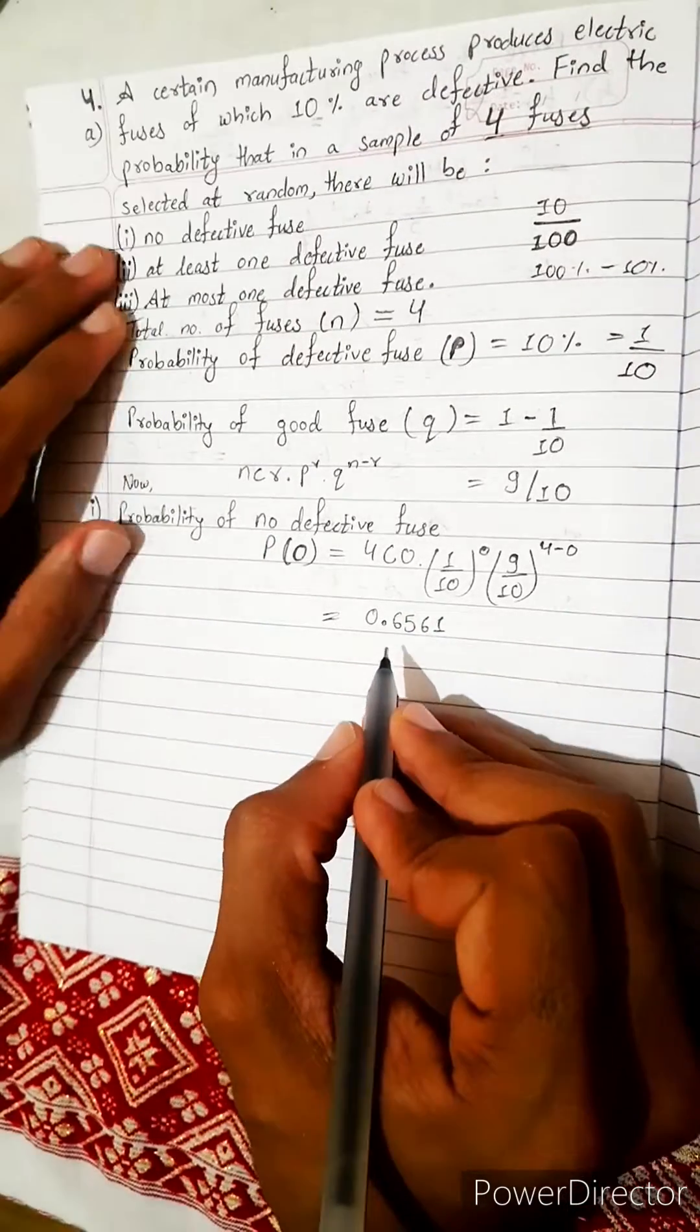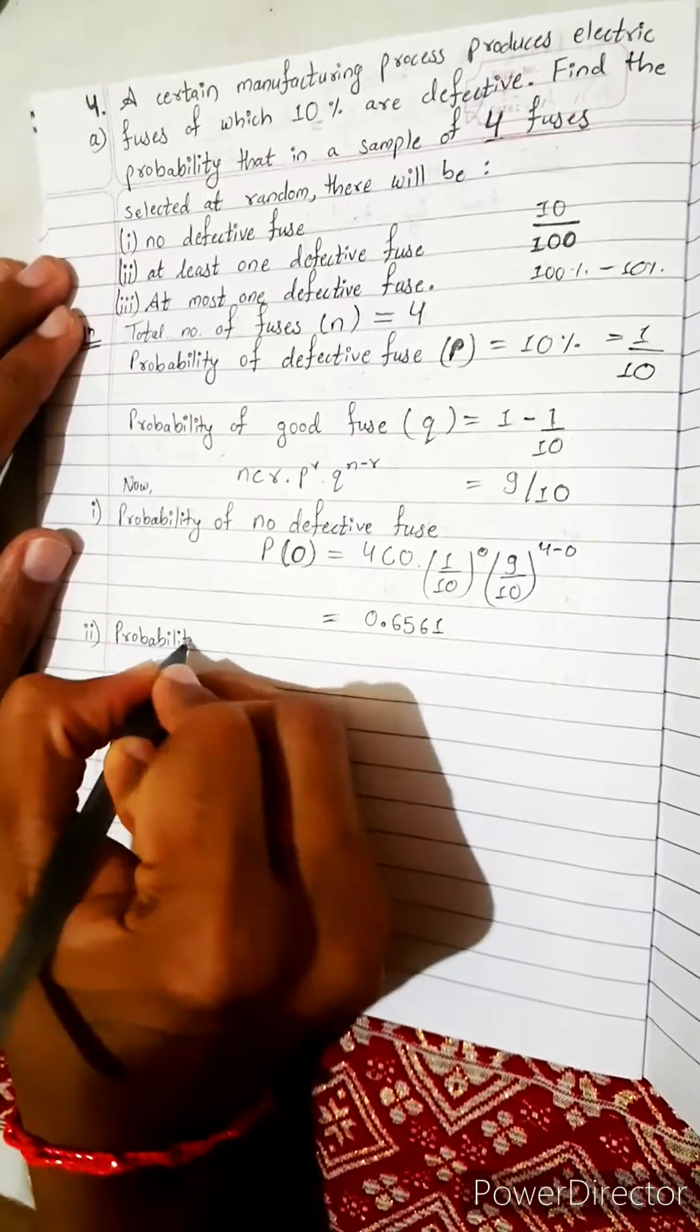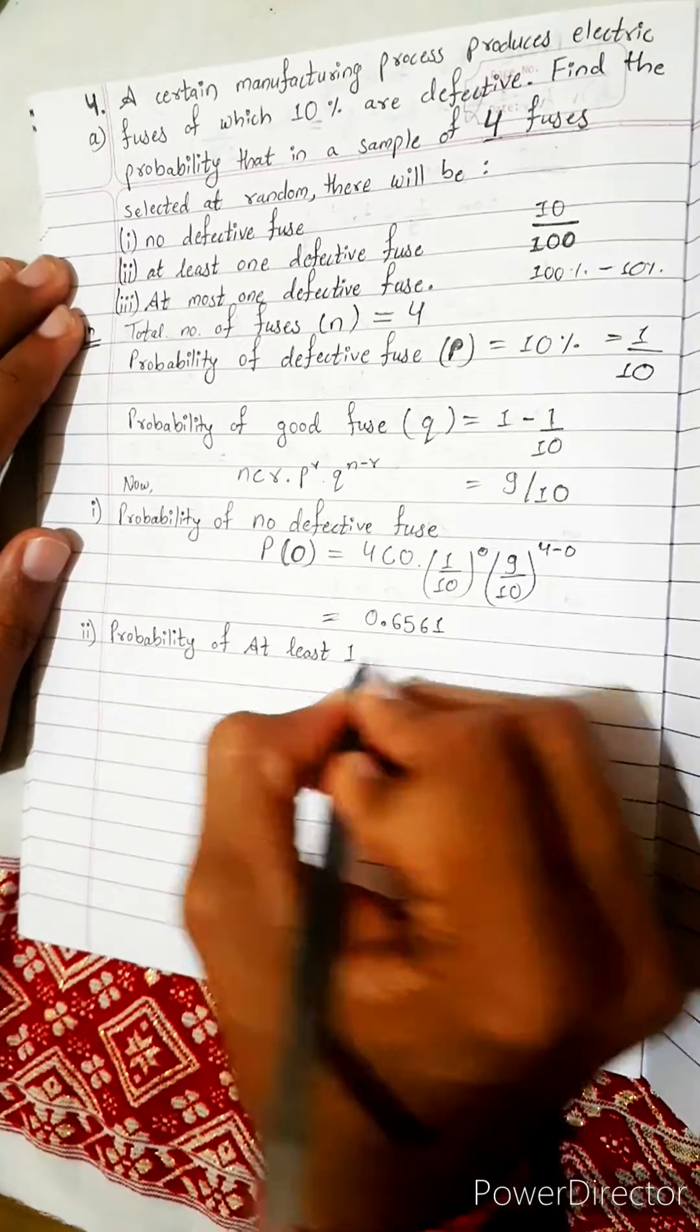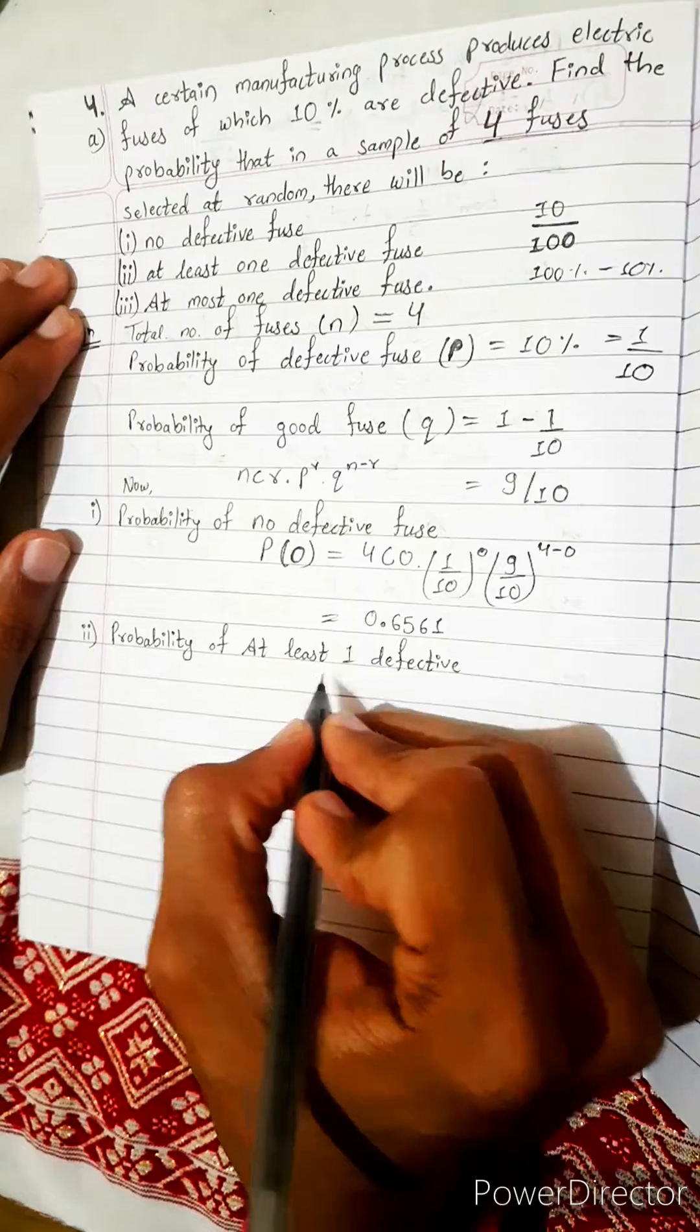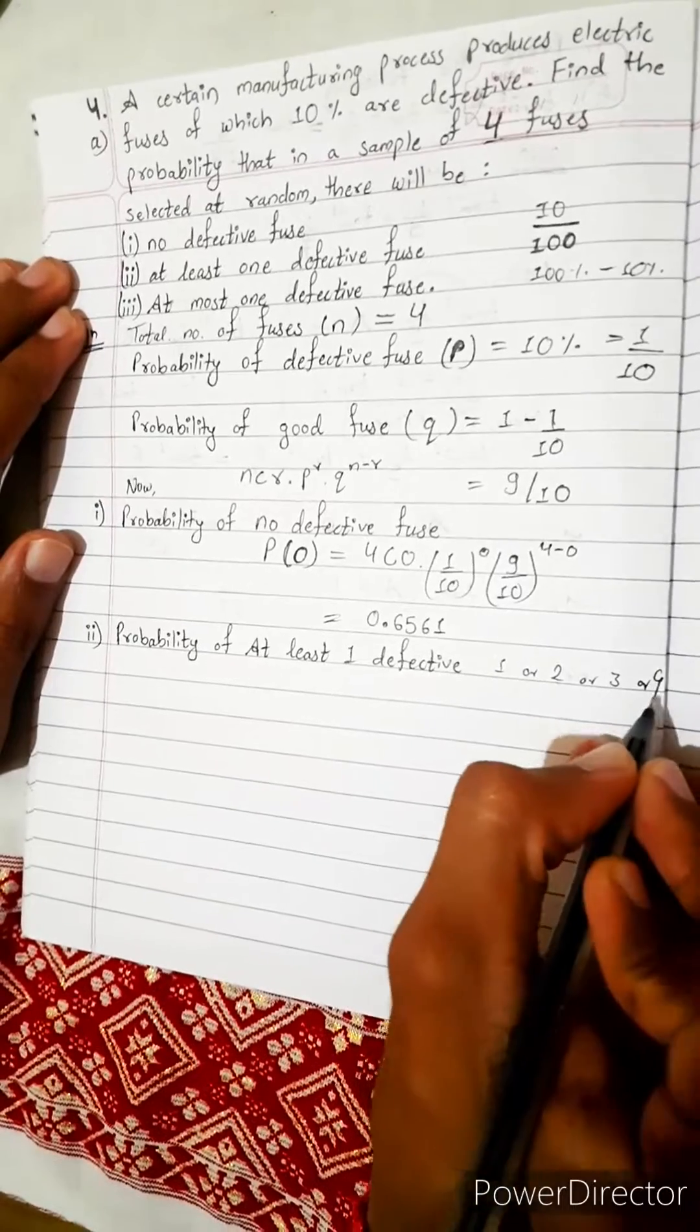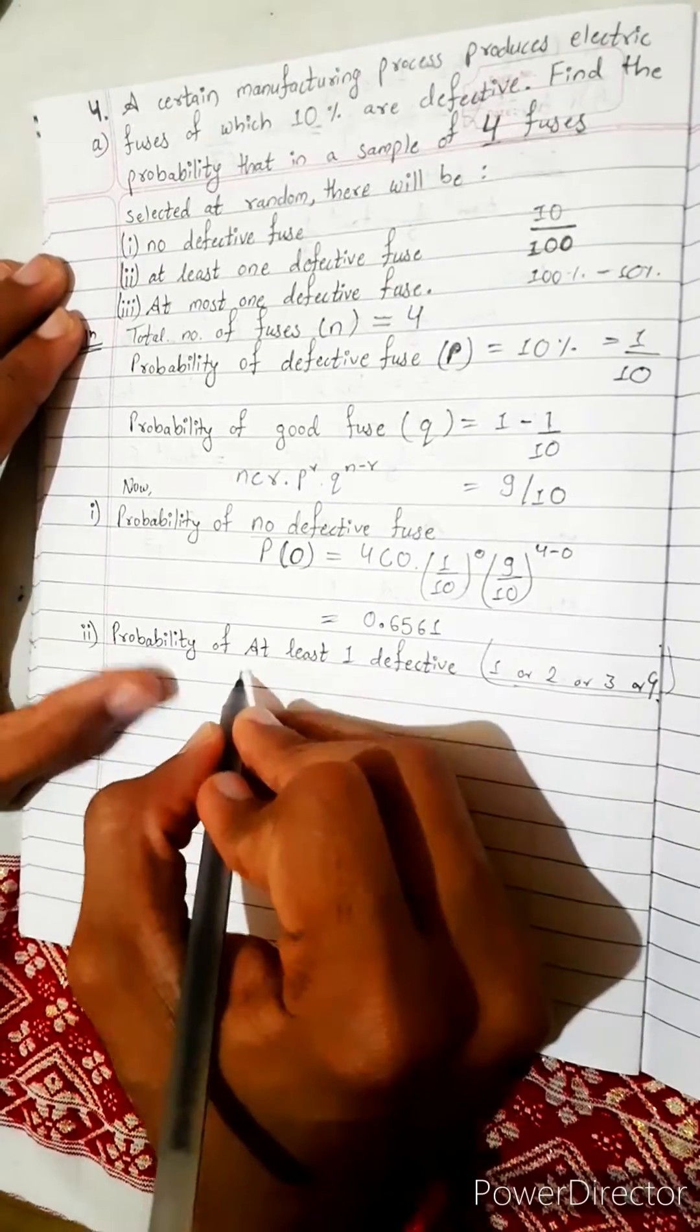Now, probability of at least one defective. It means either one defective or two defective or three defective or all four defective. This is no defective, this is any one defective. So let's subtract.